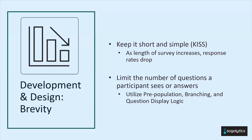You can also utilize pre-population. For instance, if you already know where someone lives — their state, city — or perhaps you know their manager or their college major, you wouldn't need the participant to fill out that information. You can simply allow that information to be pre-populated, which saves them time, and they can answer only the questions you don't already know the answer to.